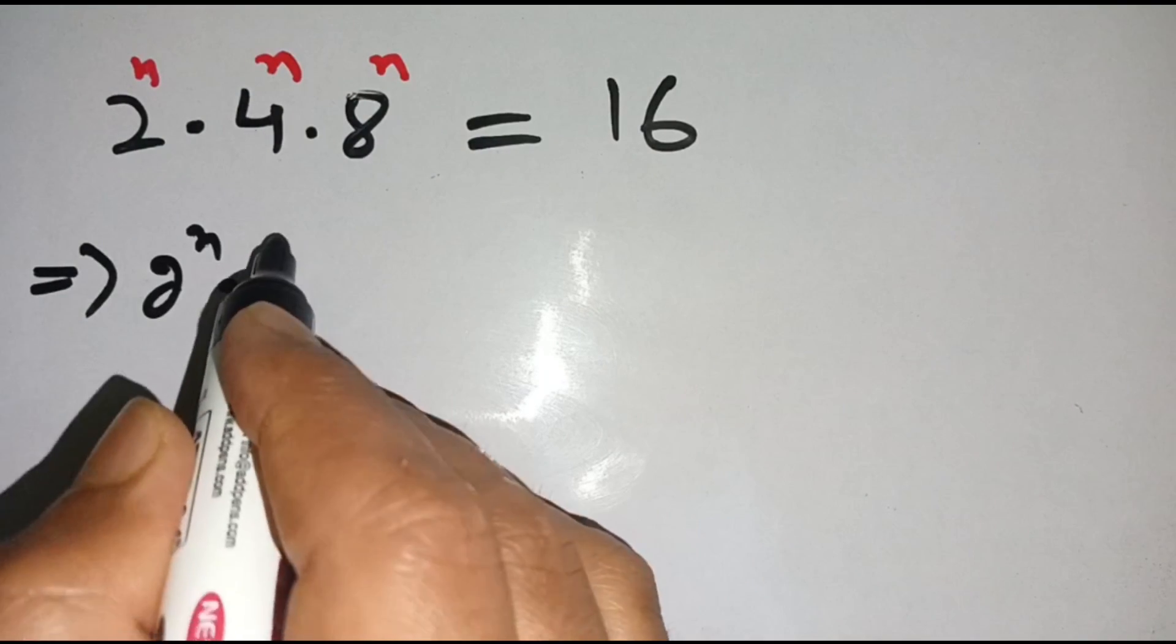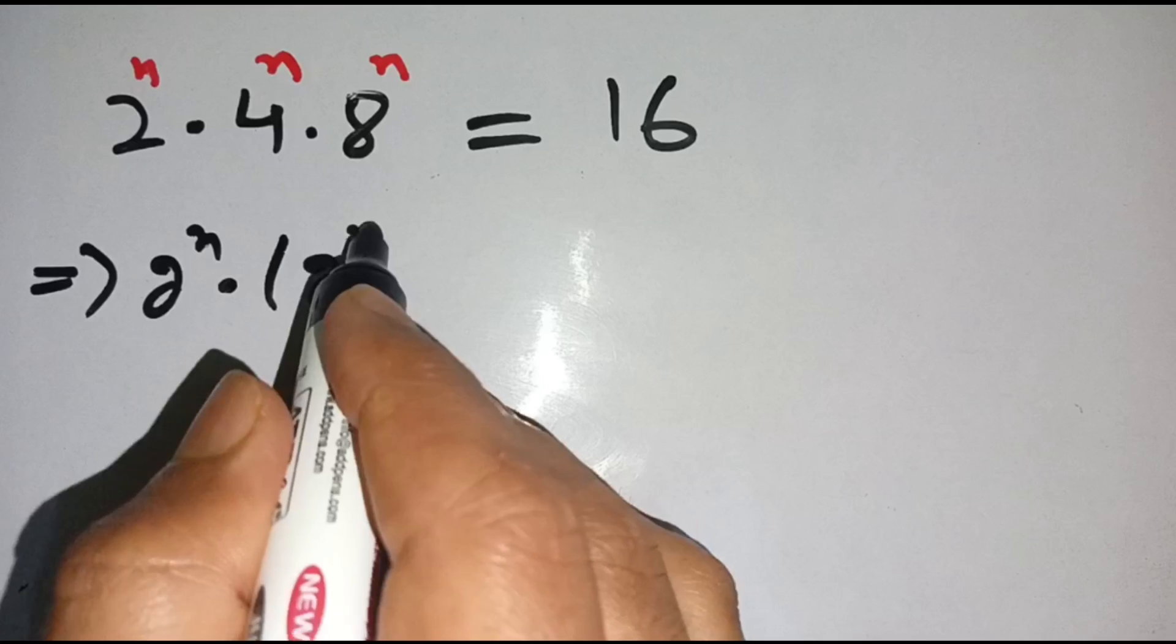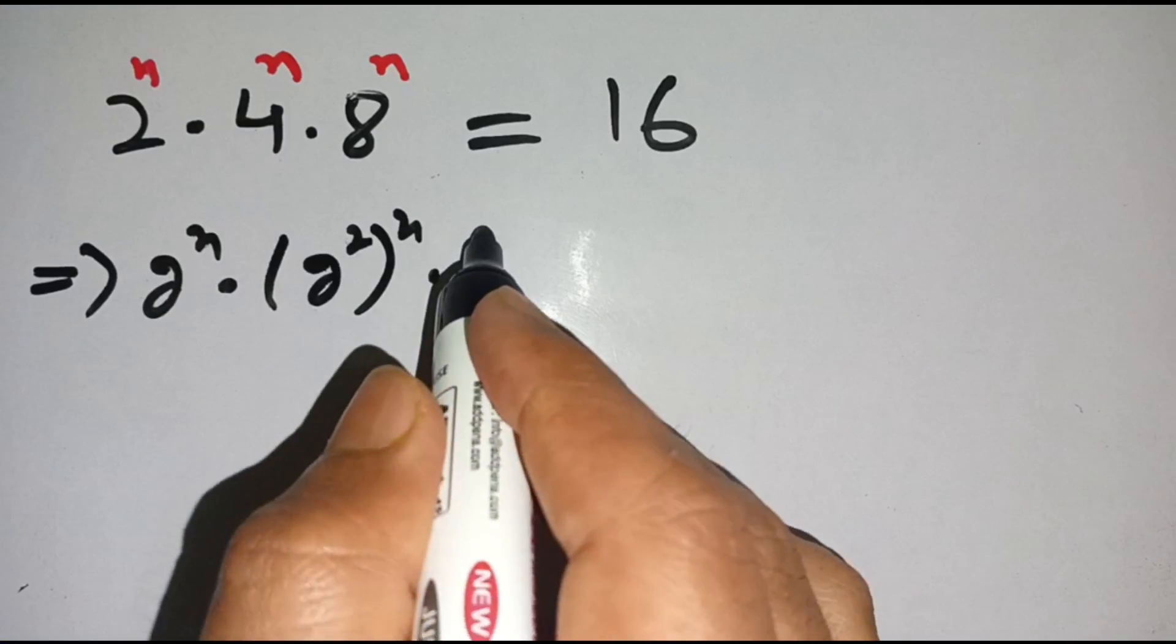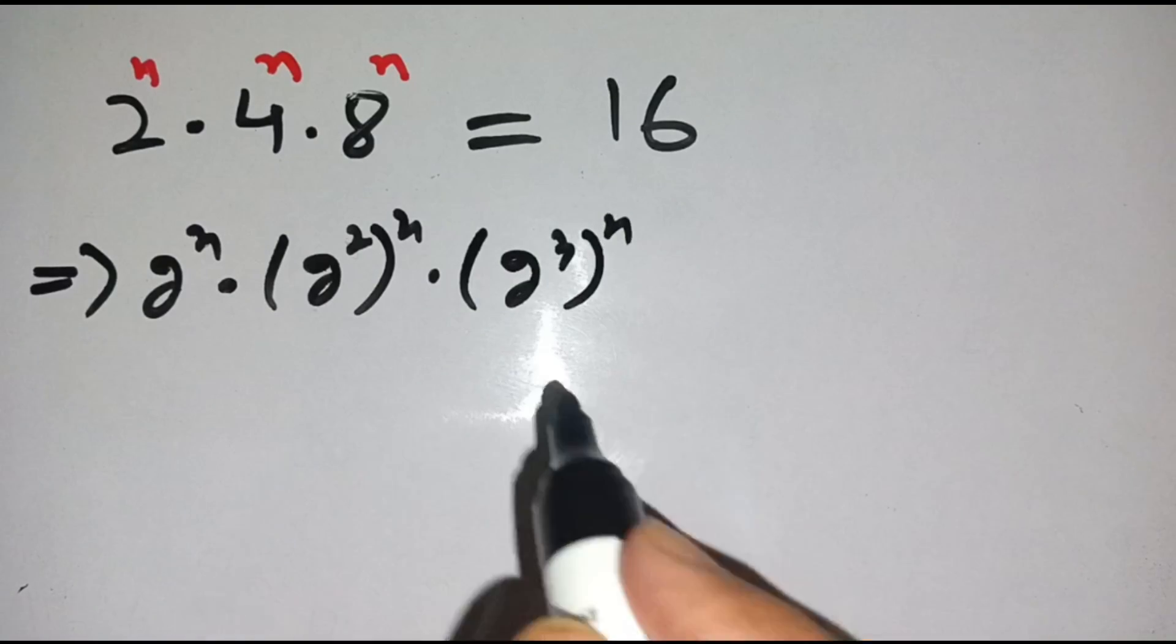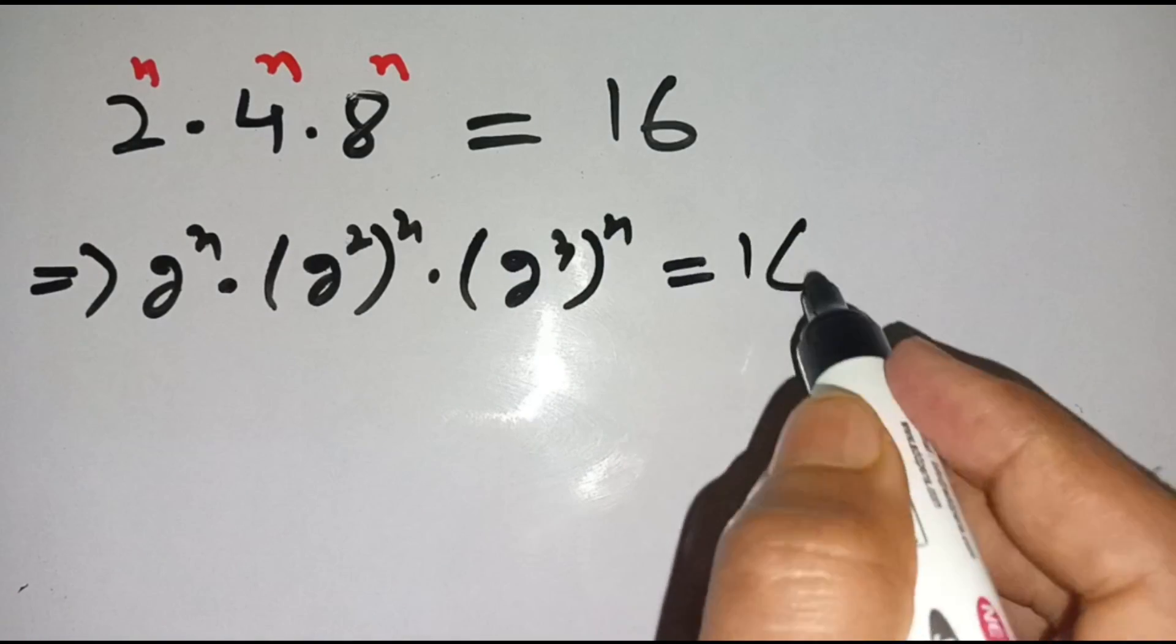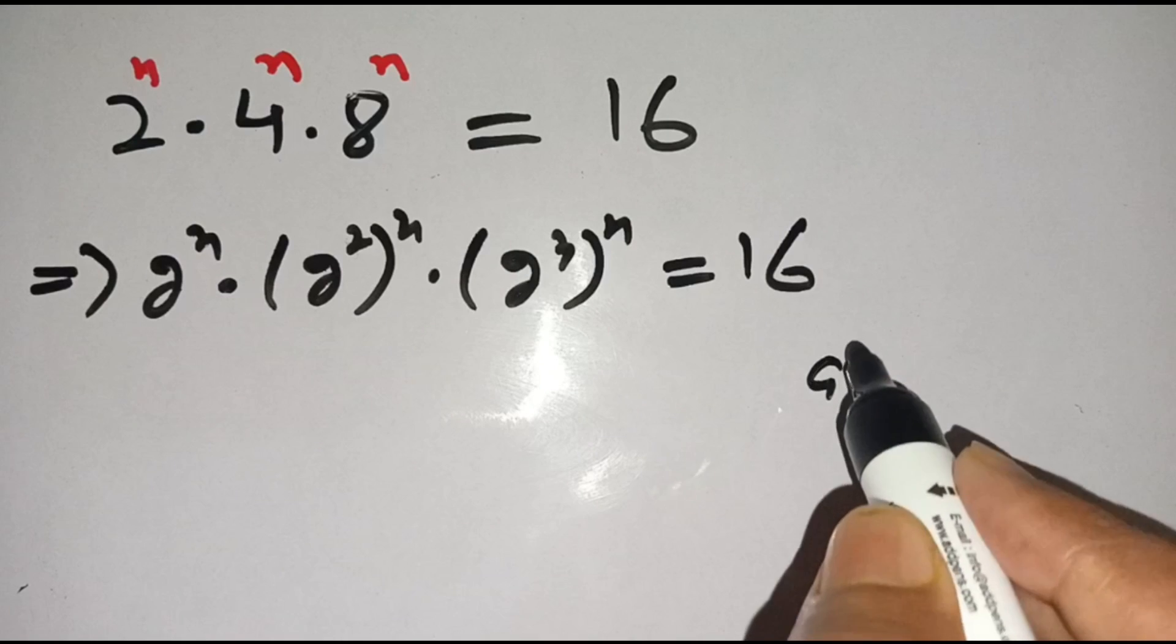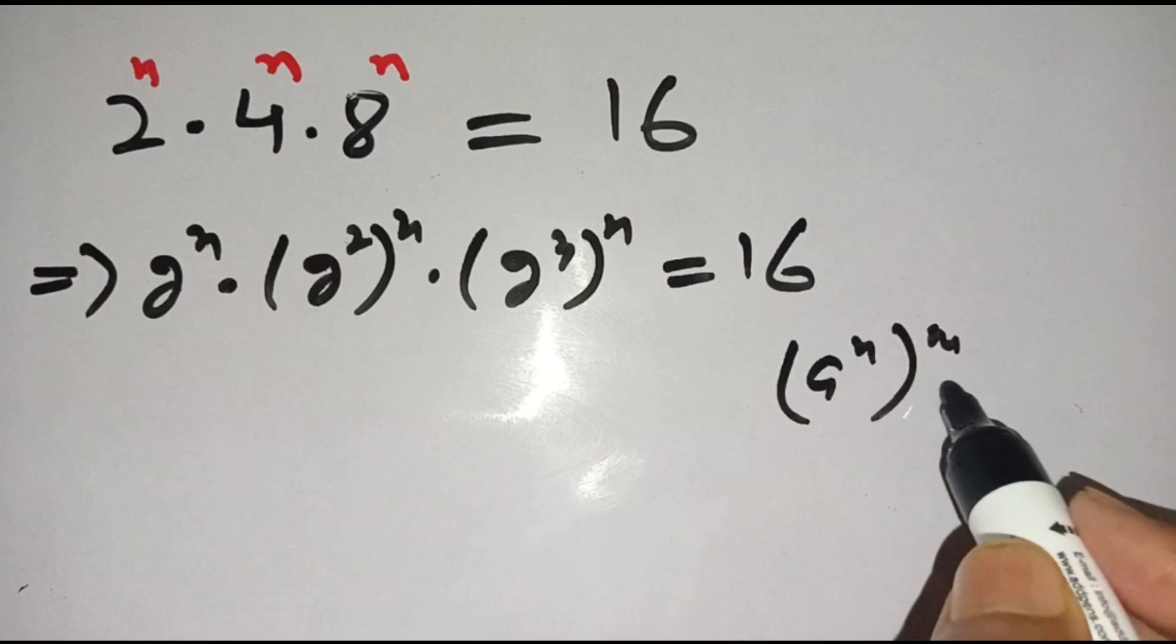times 4 can be written as 2^2, bracket power n, times 8 can be written as 2^3, bracket power n, is equal to 16. And we know that if (a^n)^m, then it is equal to a^(n times m), means that we can multiply its power.